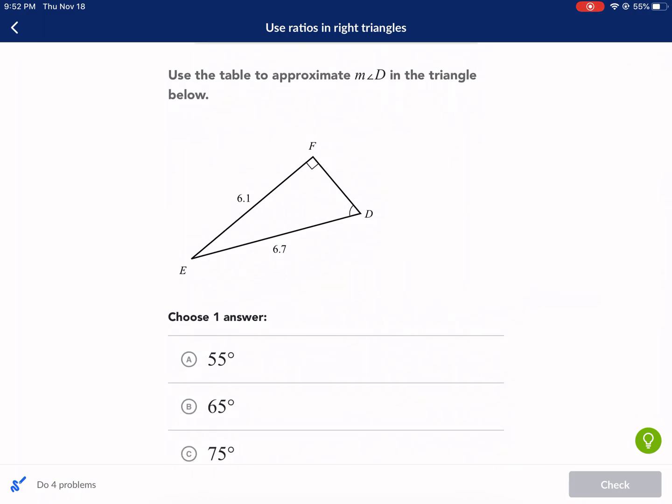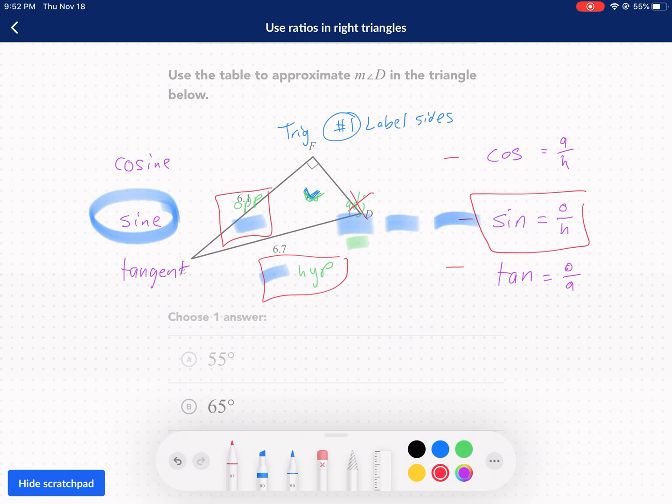I need to set up a ratio. The sine of angle D is going to be equal to my opposite over hypotenuse. So sine of angle D is equal to our opposite side, 6.1, over our hypotenuse, 6.7. You'll need a calculator for this portion. So 6.1 divided by 6.7, and this is equal to 0.91.